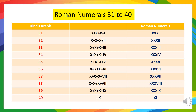40 means XL. In the case of 40, we cannot write XXXX because no symbol can be repeated more than 3 times. So according to rule 3, we will do the subtraction — 50 minus 10 is 40. So we will write 40 as XL, where X means 10 and L means 50.